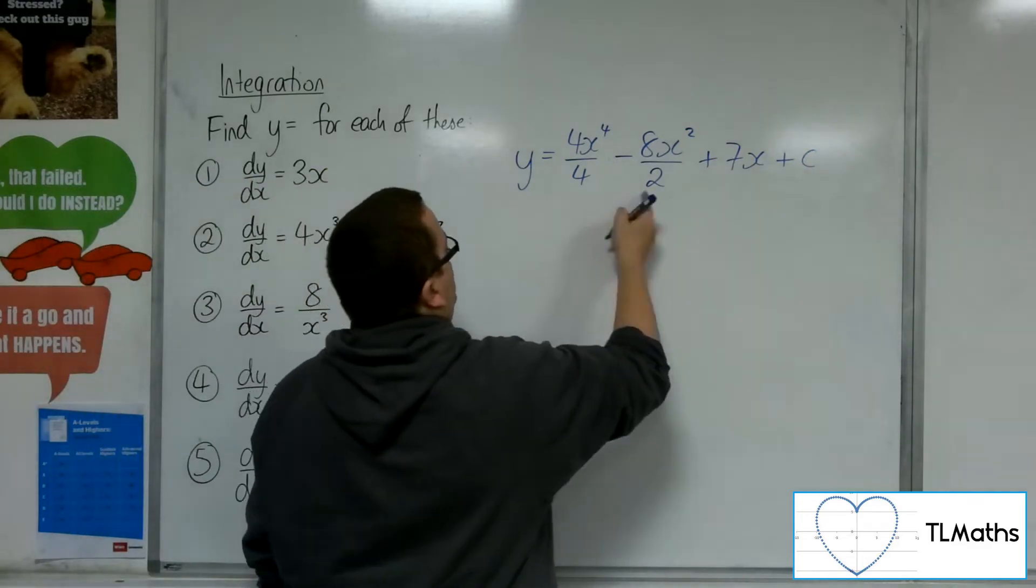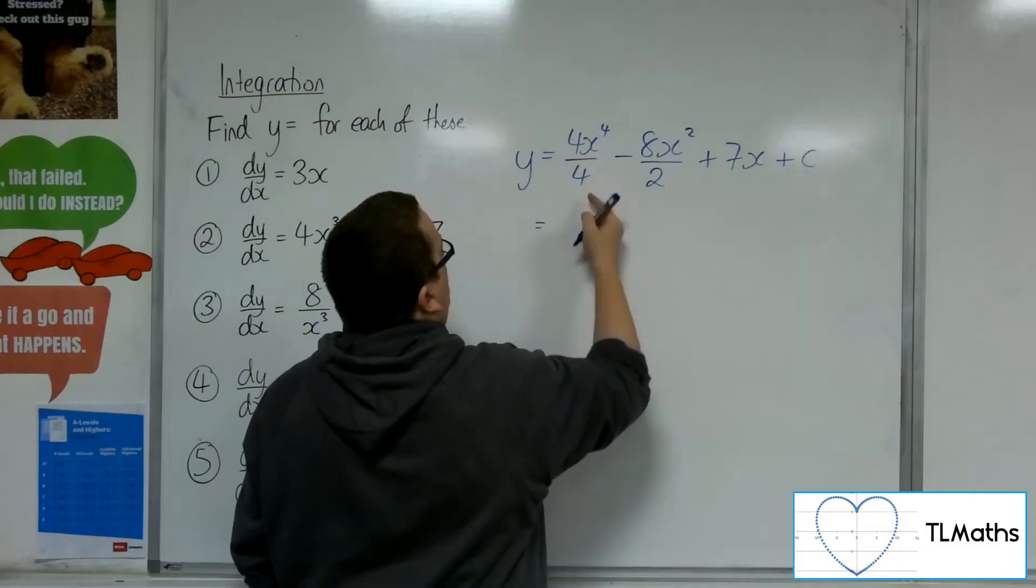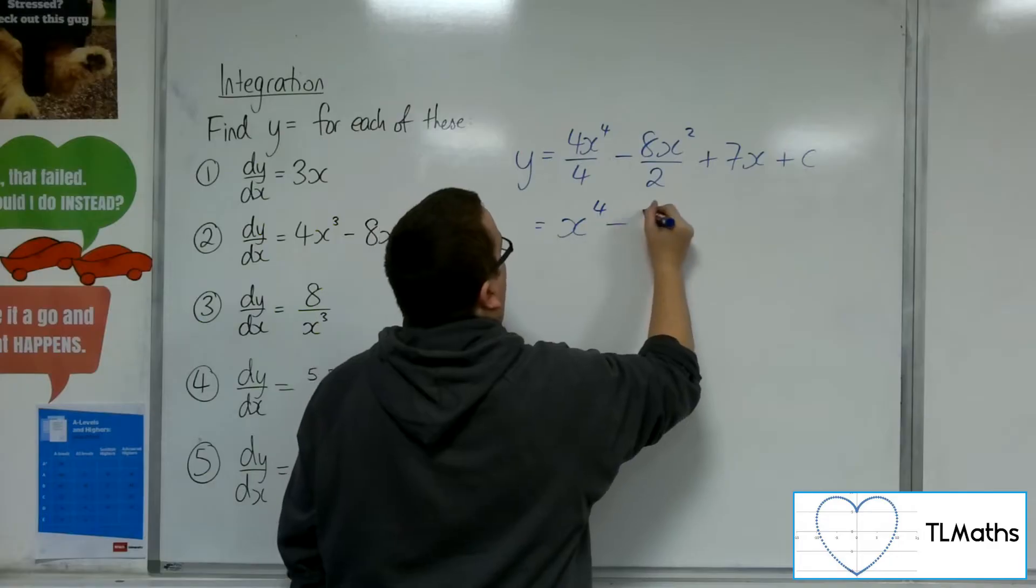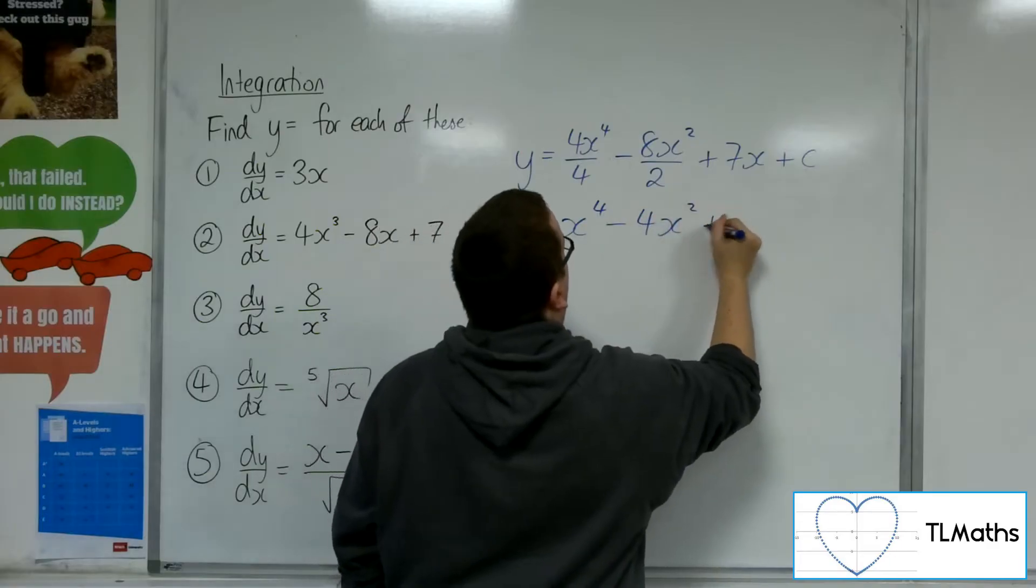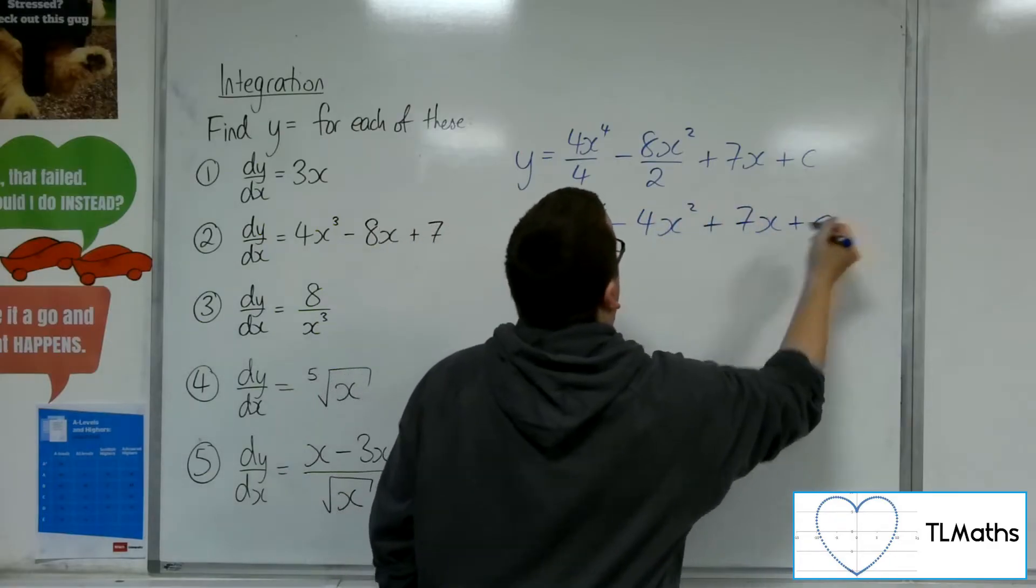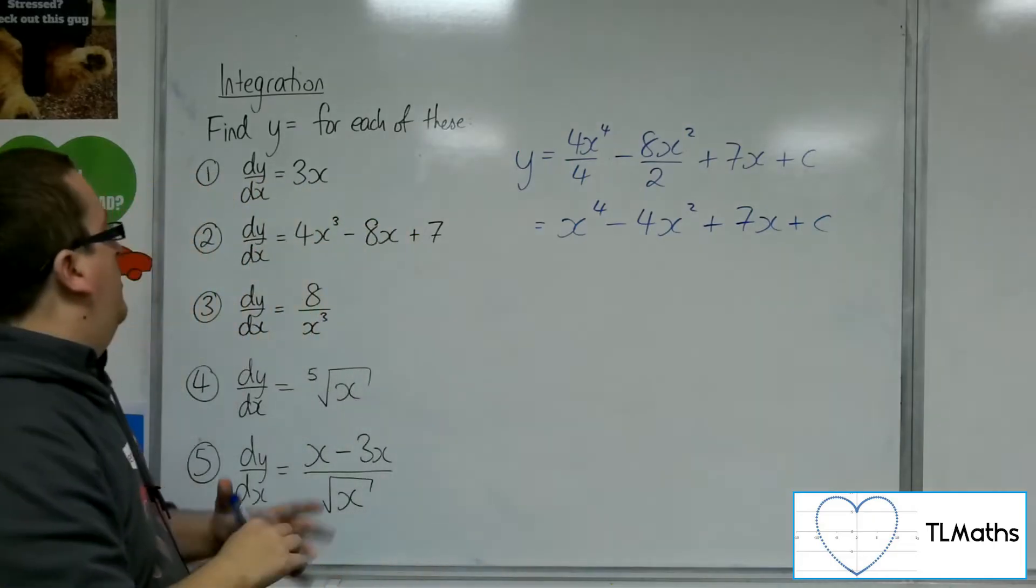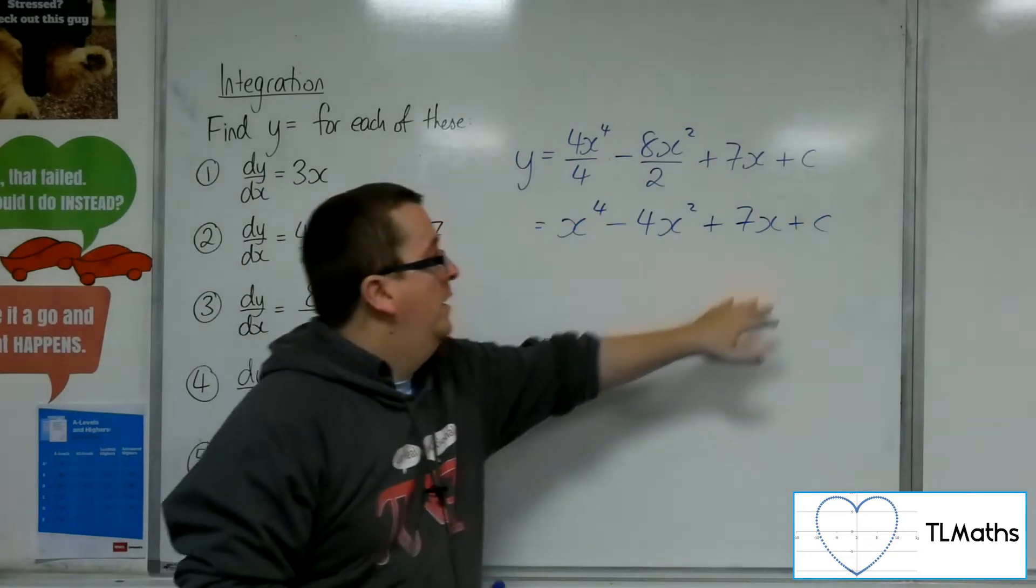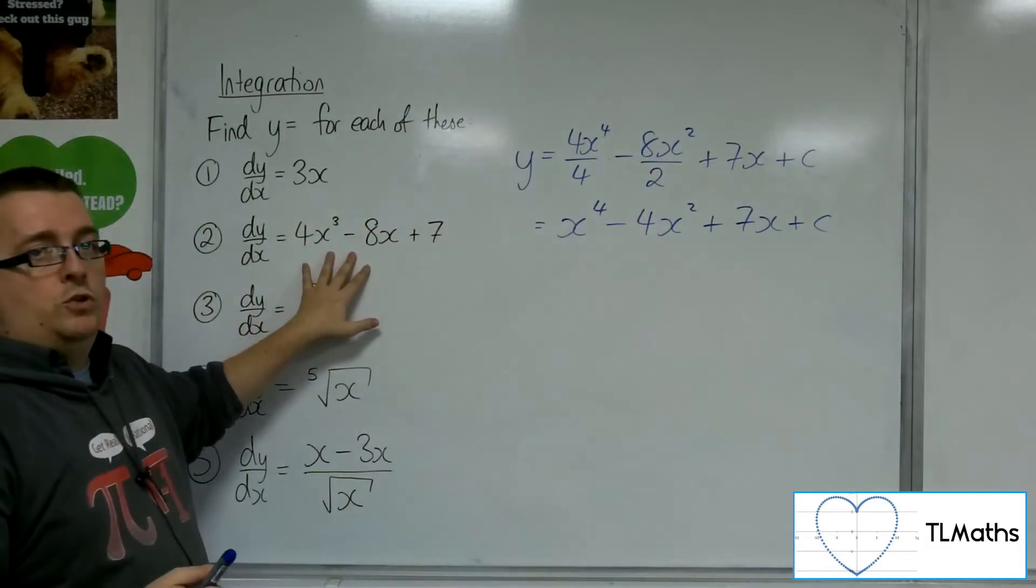Now, these fractions can be simplified. So, 4 over 4 is just 1, so that's 1 lot of x to the 4. 8 over 2 is 4, so take away 4 lots of x squared plus the 7x plus c. So that is the general solution for this differential equation.